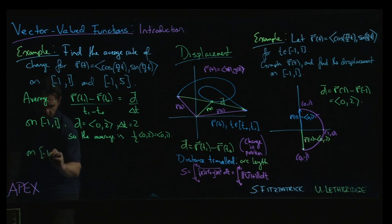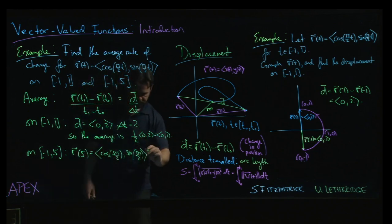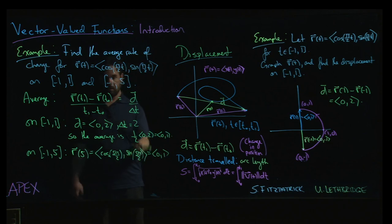And if we were going to do this on -1 to 5, well, first we've got to calculate r(5). So that's going to be cosine of 5π/2. But you know what? That's still (0,1). 5π/2 is one full revolution plus a right angle, so we're back at the top of the circle.